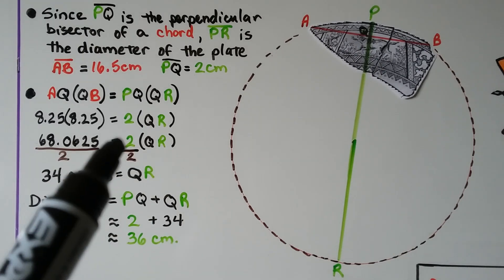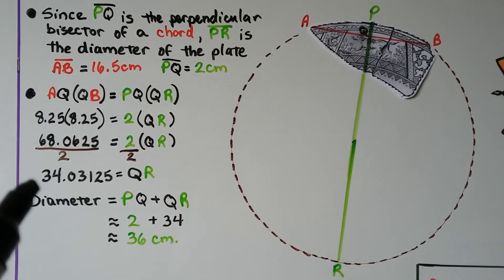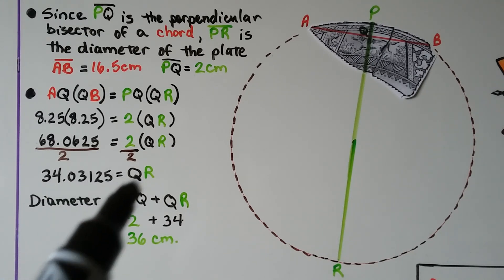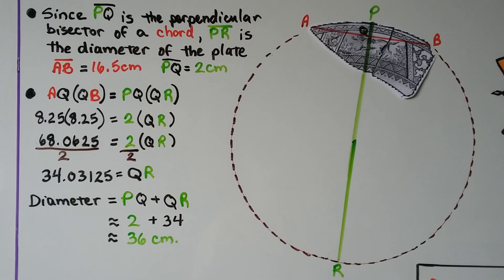We divide both sides by 2, and we get 34.03125 is equal to QR. And it wanted us to round to the nearest centimeter. We're going to find the diameter by adding PQ plus QR to get its full length. So we have 2 plus 34, so we're going to say that's approximately 34 to be the closest centimeter. So the diameter was about 36 centimeters.